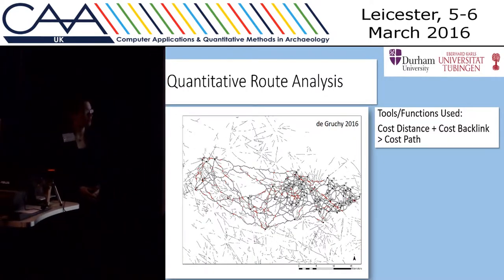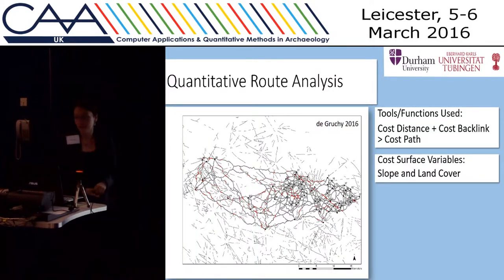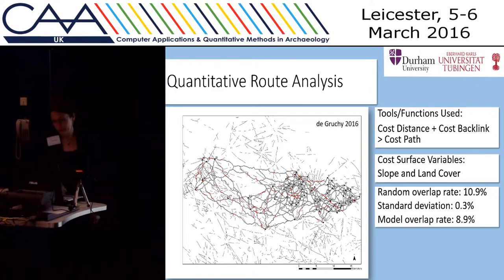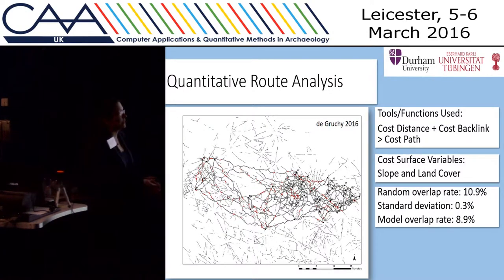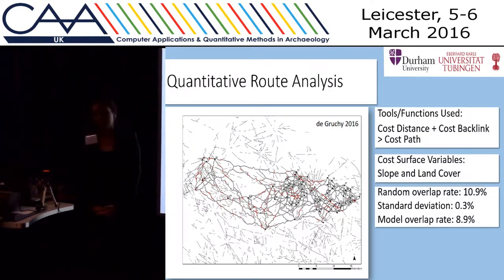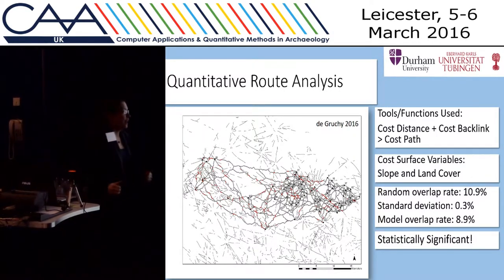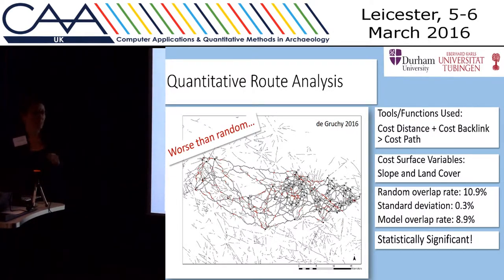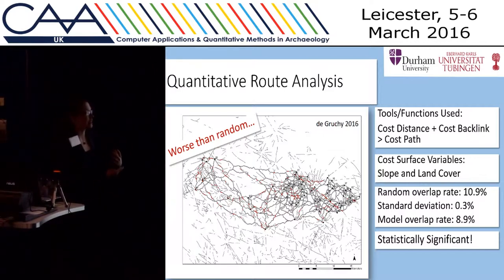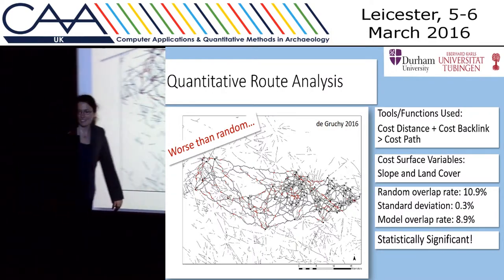Sometimes routes have quite high matching rates but are actually just crossing perpendicular — and of course they have to overlap if they cross. I can check for that visually, which is a useful additional step. This model uses dead basic cost distance plus cost path run through Esri's ArcMap cost path function, incorporating both slope and land cover into the cost surface. The result is that the random population overlaps the hollow ways at about 10.9% with a standard deviation of 0.3%, meaning my route model is statistically significant — but in the wrong direction. It's actually worse than throwing random paths at the screen.